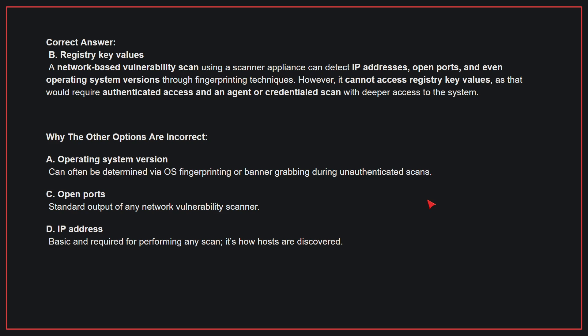Why the other options are incorrect: A. Operating system version — this can often be determined via OS fingerprinting or banner grabbing during unauthenticated scans. C. Open ports — standard output of any network vulnerability scanner. D. IP address — basic and required for performing any scan; it's how hosts are discovered. Therefore, the correct answer is B.